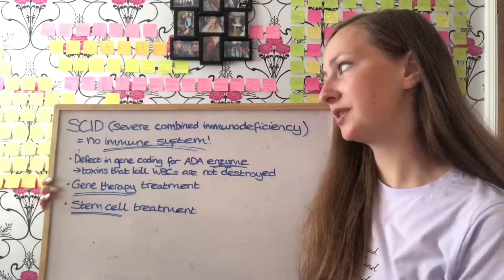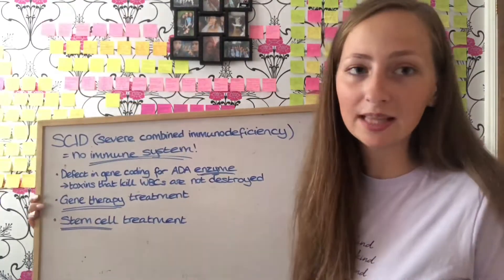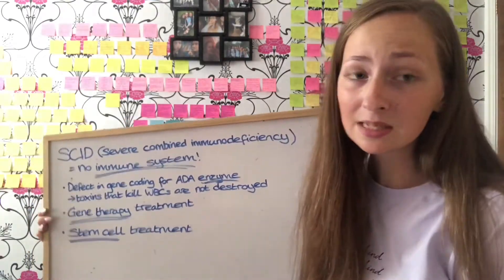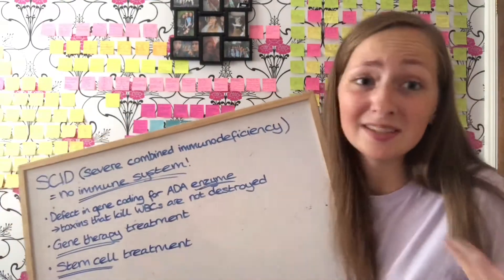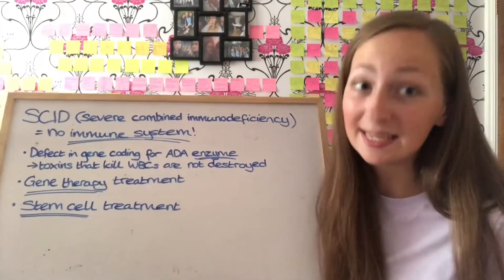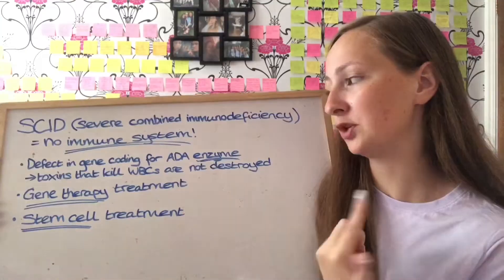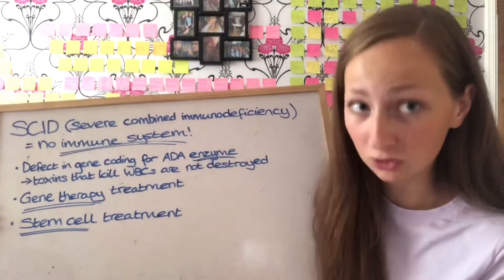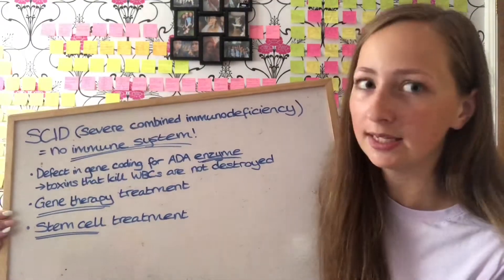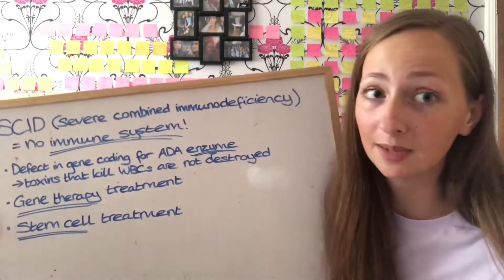SCID is severe combined immunodeficiency disease — basically it means you have no immune system. These are the people who have to live in isolation in completely sterile environments, like a bubble. They can't fight infections; if they get ill they will essentially die. This is caused by a defect in the gene that codes for the ADA enzyme — adenosine deaminase. The ADA enzyme destroys the toxins that would kill white blood cells, but without it the toxins kill the white blood cells.